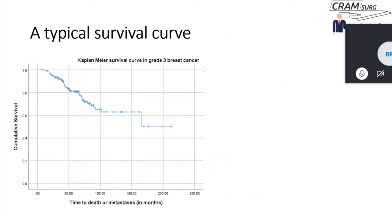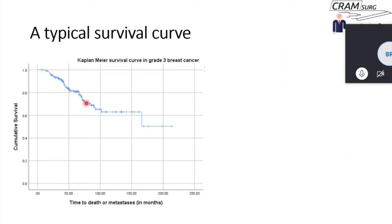Here is a typical Kaplan-Meier survival curve — I've got this data from my PhD. It shows survival of patients with grade three breast cancer. On the x-axis, you have time to a specific endpoint: here, death or metastasis in months. On the y-axis, you have the probability of people surviving. At the beginning of the study, all patients are alive, and then as time goes on, patients die or develop metastasis. The y-axis gives you the probability of surviving at a particular time point.